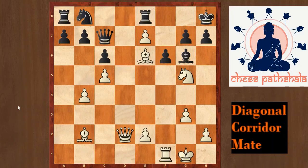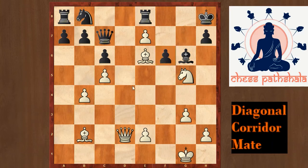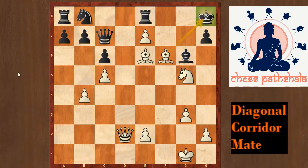In this position from the game of Beliavsky against Gelfand, white played the spectacular move rook takes f6. This is also based on the concept of corridor mate — if g takes f6, then bishop takes f6 checkmates the king trapped on h8. Once again it is a corridor mate. Now to test your skills, here is a test position.